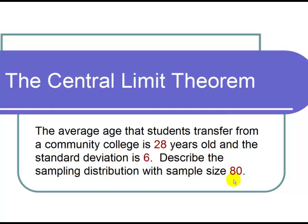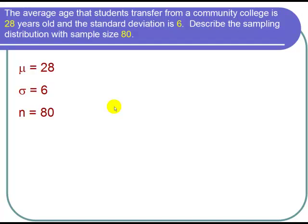Let's first start out by running our cast of characters. First, our mean μ equals 28 because that's the average age that students transfer. Our standard deviation σ equals 6 because that's given as a standard deviation. And finally, we have sample size 80, and we call that n equals 80.